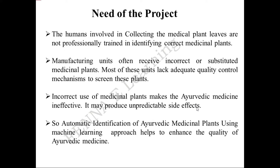Regarding the need of the project: in the current systems, humans are involved in collecting the medicinal plant leaves and they are not professionally trained in identifying the correct medicinal plants. The manufacturing units sometimes receive incorrect medicinal plant leaves, so the medicine manufactured by the industry may be ineffective and may produce unpredictable side effects. Therefore, automatic identification of Ayurvedic medicinal plants using a machine learning approach helps to enhance the quality of Ayurvedic medicine.